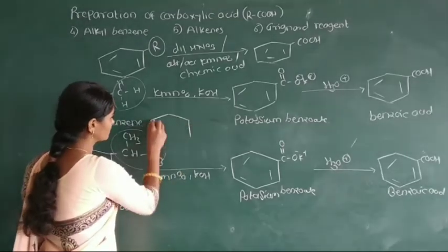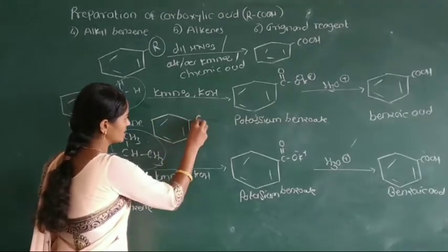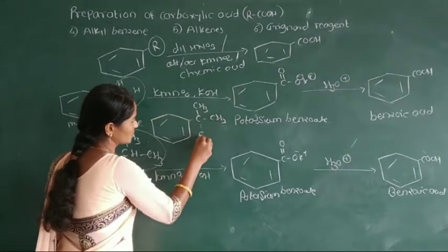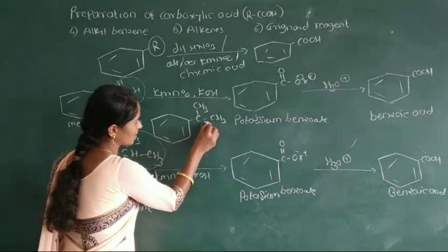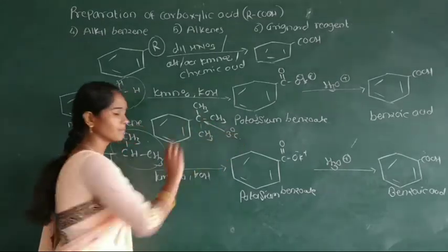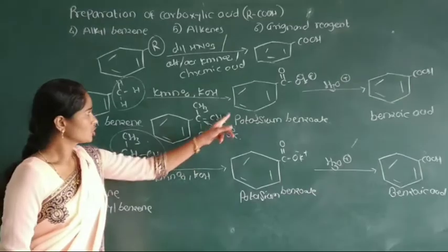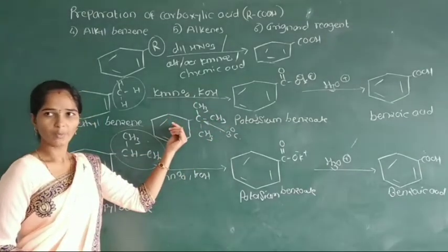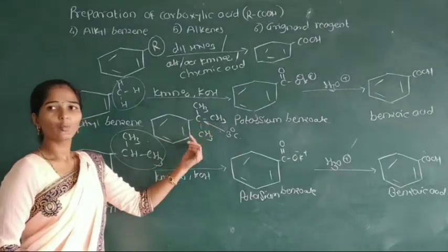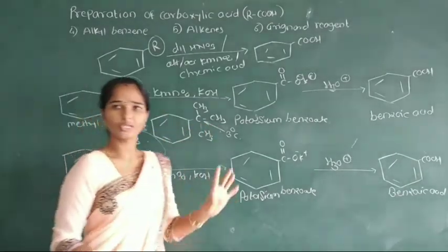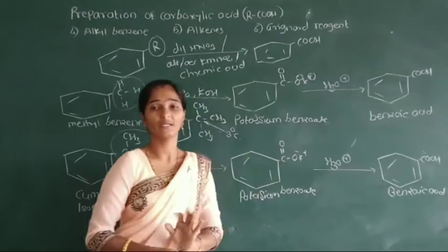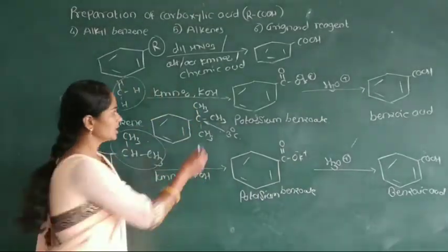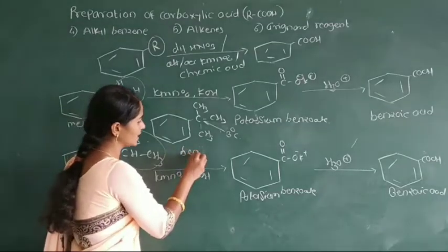For example, suppose this is a benzene and this benzene has CH3 and CH2 attached — CH is a tertiary carbon. In this example, this tertiary alkyl group is attached to the benzene group, and this benzene compound is non-oxidized into the corresponding carboxylic acid.